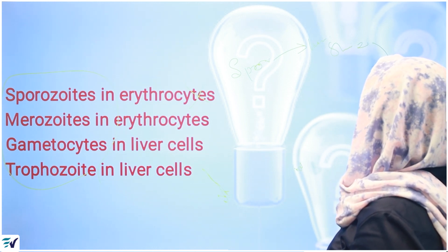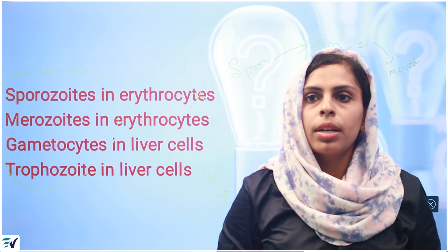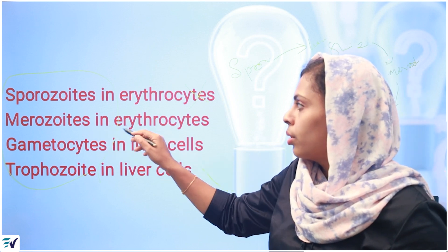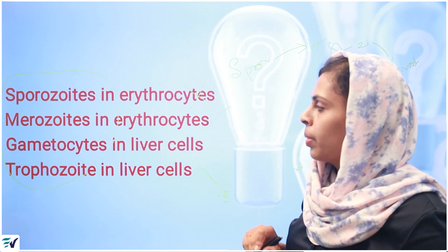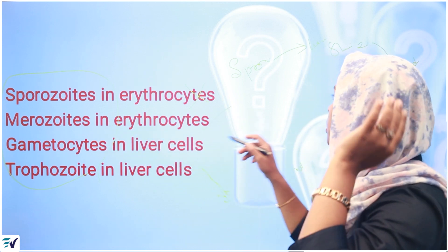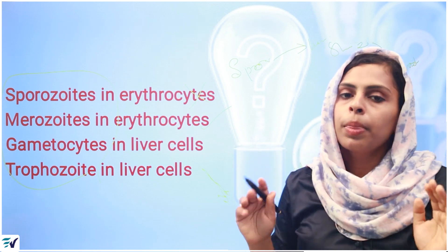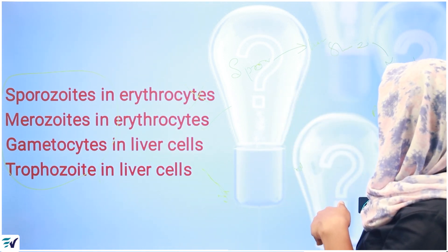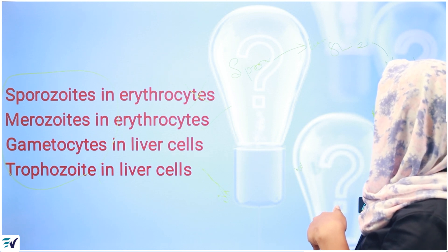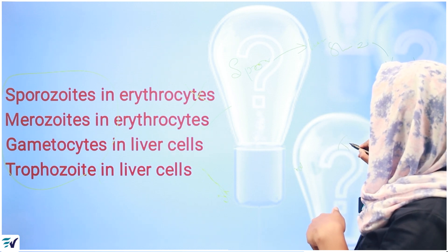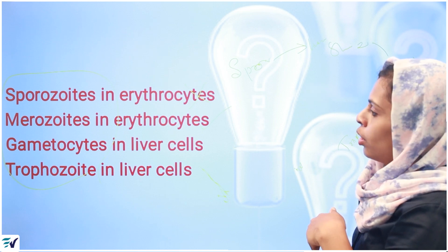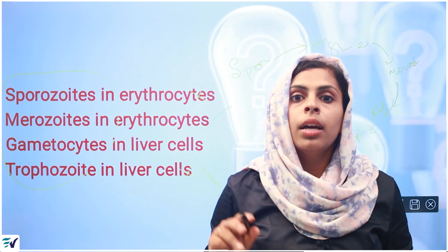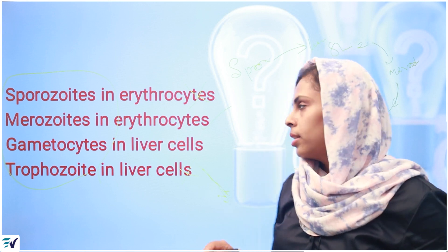Merozoites are made from the liver stage. These merozoites then attack erythrocytes. So merozoites in erythrocytes is correct. In the erythrocytes, merozoites mature into trophozoites. Therefore, trophozoites in liver cells is wrong — trophozoites are seen in erythrocytes.